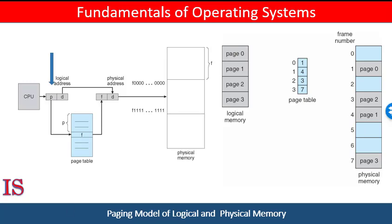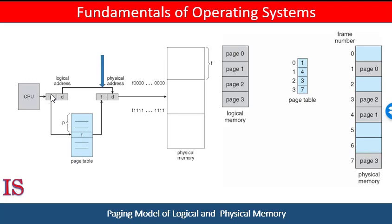The memory management unit extracts that page number and uses it to search the page map table, as you can see over here. It goes down the list and searches for the page map table, then extracts the frame number. It scrolls down the pages until it finds the page it needs, and then it extracts the frame number, which is the physical location of this page. It then replaces the page number with the frame number, so now it has the physical address of the instruction it needs, which includes the frame number and the displacement within the frame where that record is needed.